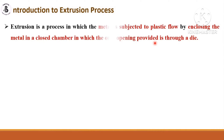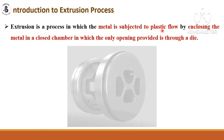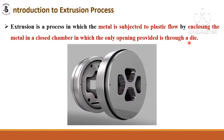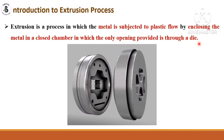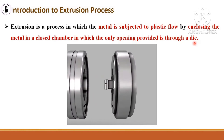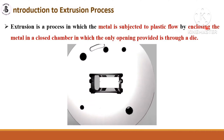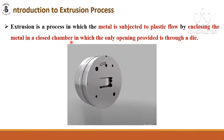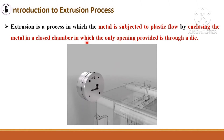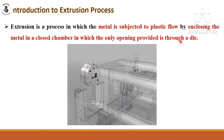In the case of the extrusion process, the metal undergoes plastic flow. Whatever cross-sectional area is required, you can pass the material through the die. In this process, the metal is subjected to plastic flow by enclosing it in a closed chamber in which the only opening is provided through a die.